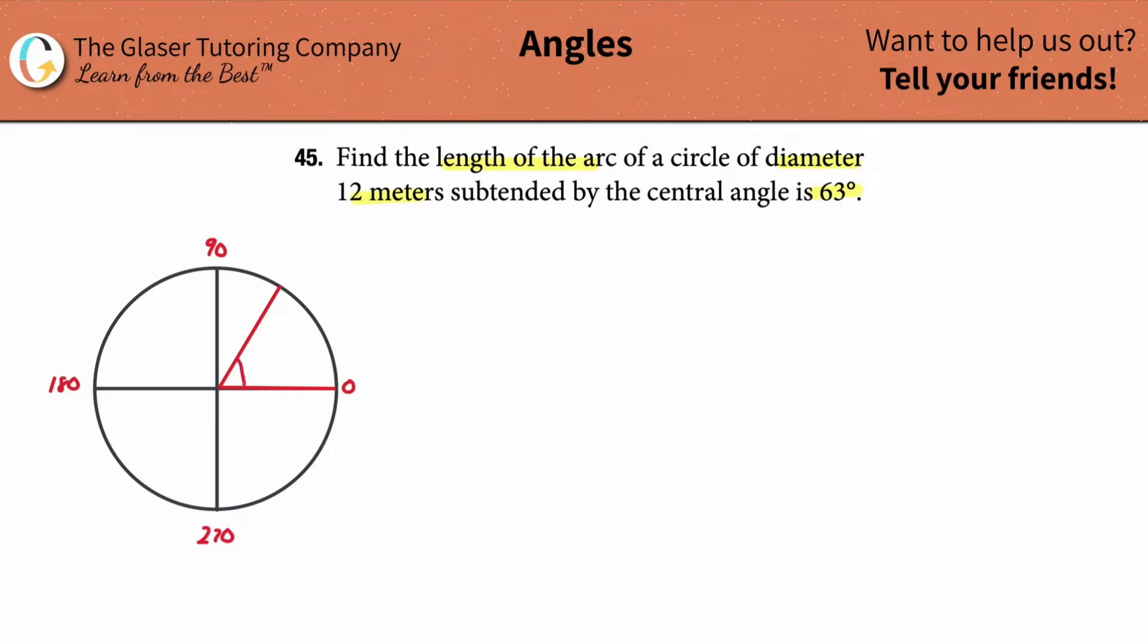So, the angle in here is going to be 63 degrees. Alright, so the angle in here is 63. Now, what we're asked to find then is we're asked to find this particular arc length right here that I'm outlining. Okay? I want to find that arc length that's S.